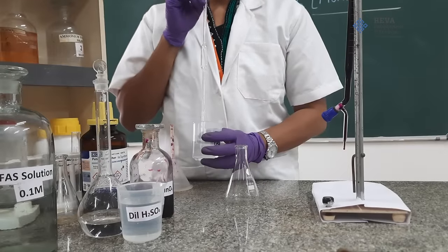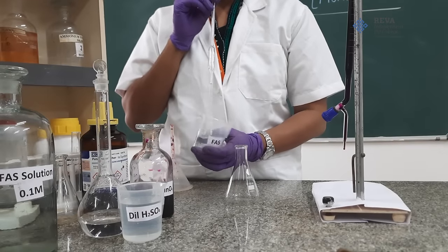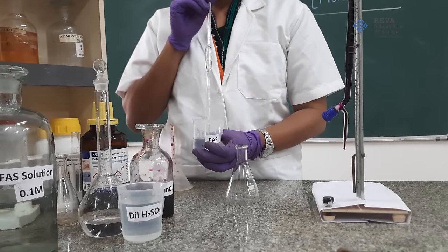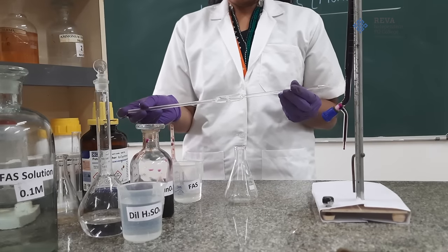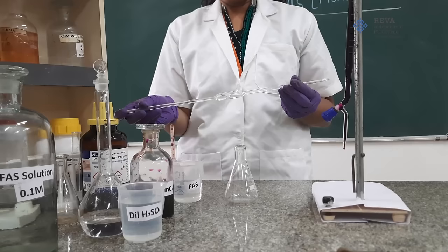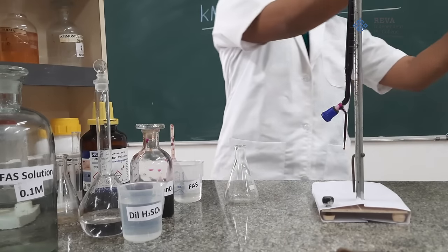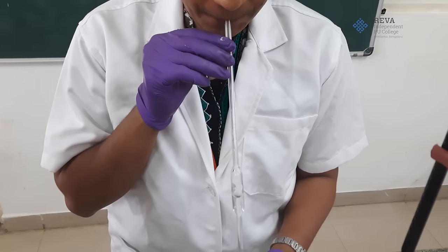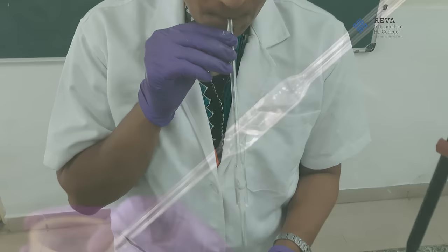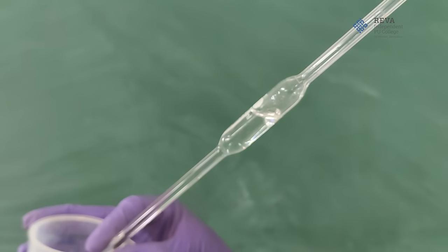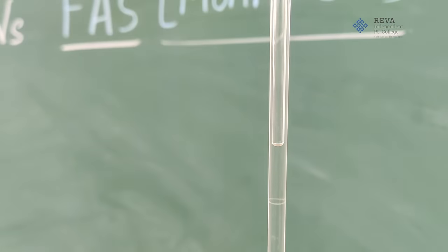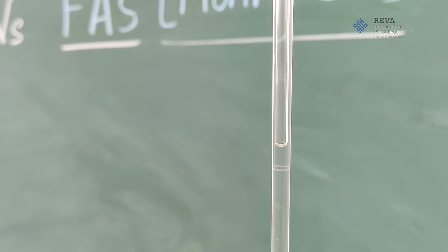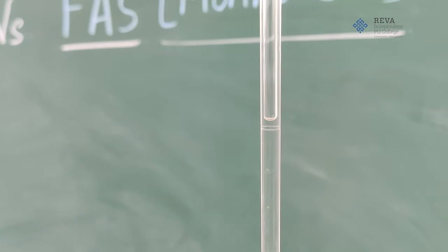Next, pipette out the little amount of FAS which is a reducing agent into a pipette and then rinse the pipette and discard this solution. Then pipette out 10 ml of ferrous ammonium sulfate solution till the mark.